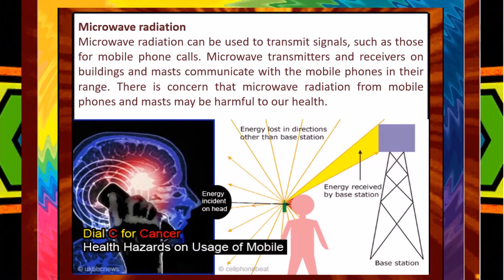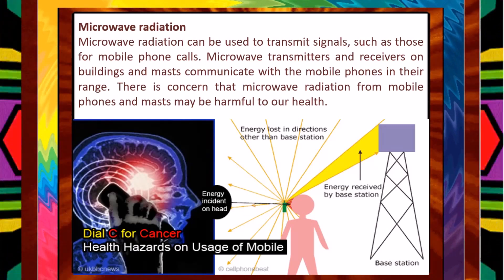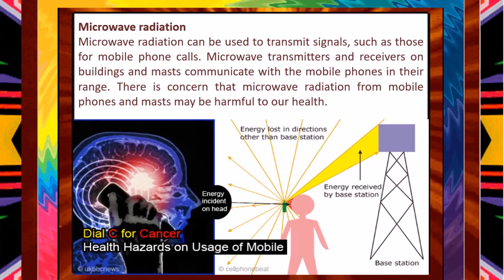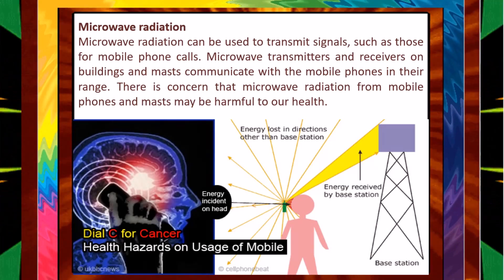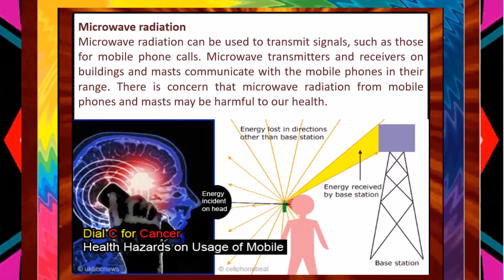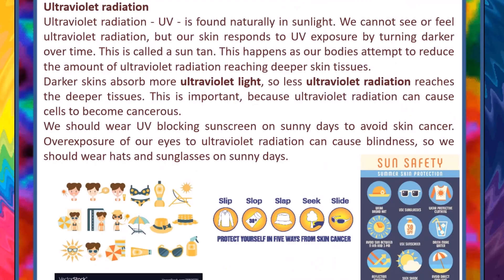Microwave radiation can be used to transmit signals, such as those for mobile phone calls. Microwave transmitters and receivers on buildings and masts communicate with the mobile phones in their range. There is concern that microwave radiation from mobile phones and masts may be harmful to our health.